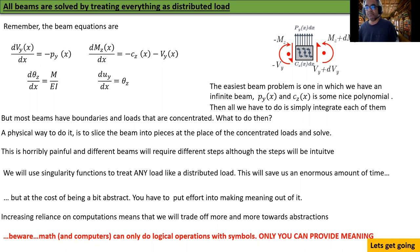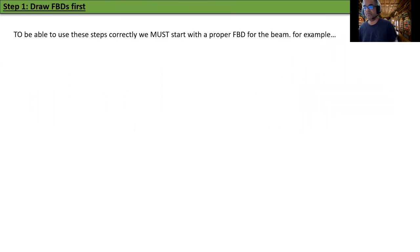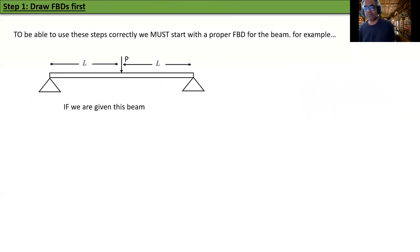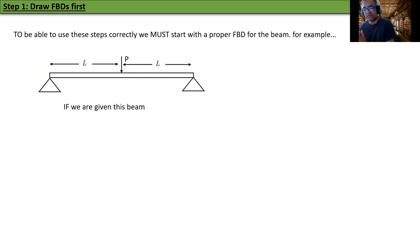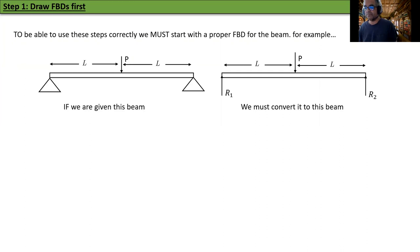To use these steps correctly we must start with a proper free body diagram for the beam. For example, I have a simply supported beam — the right-hand side is a roller joint. I've given a beam of length 2L with a load in the middle: one end is a pin, the other end is a roller — a typical simple problem. The first thing to do is convert this into a free body diagram, and there are a couple of items I want to mention.